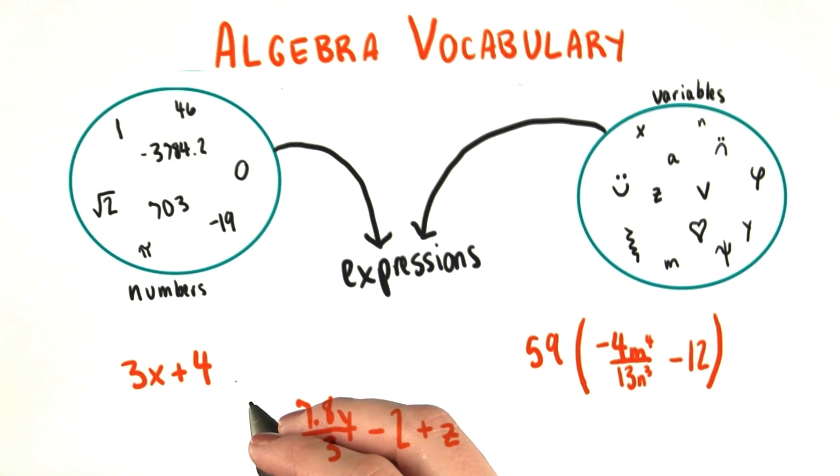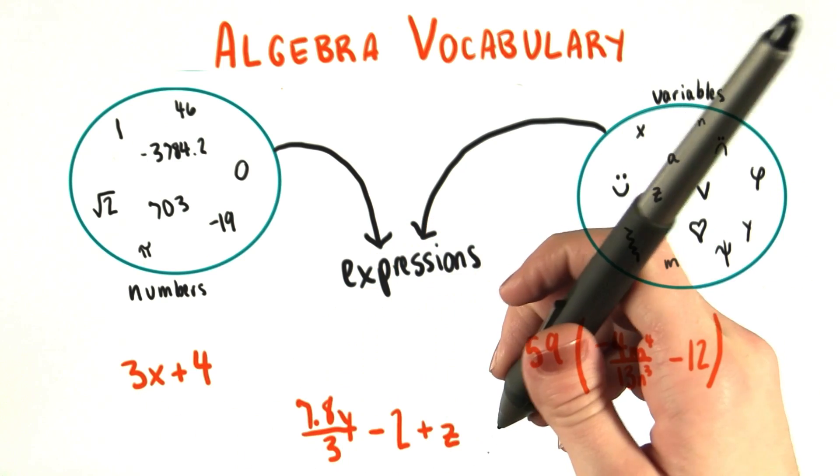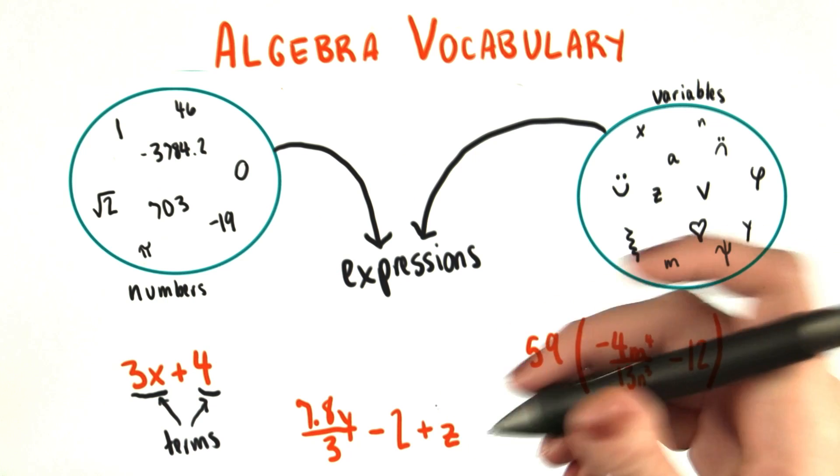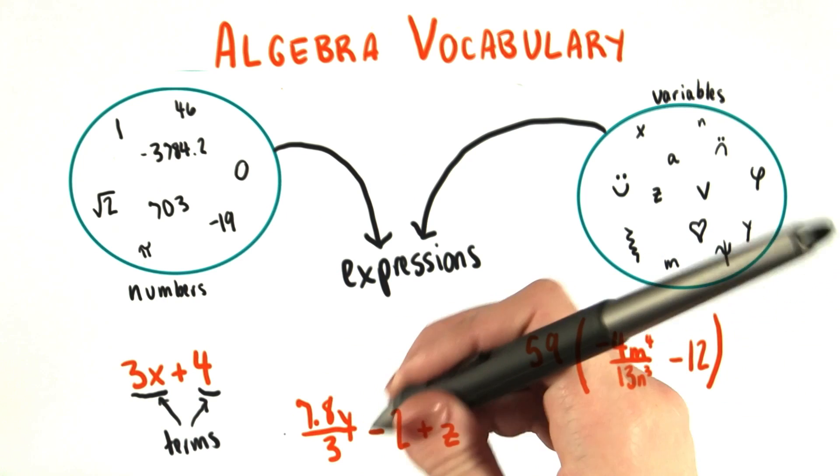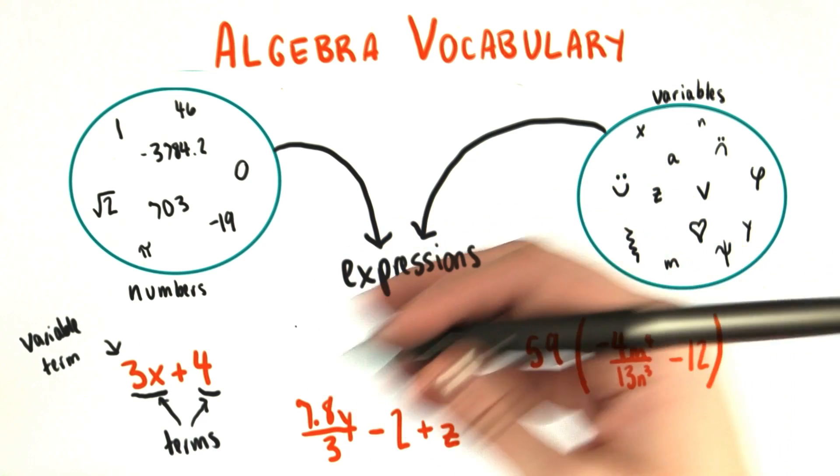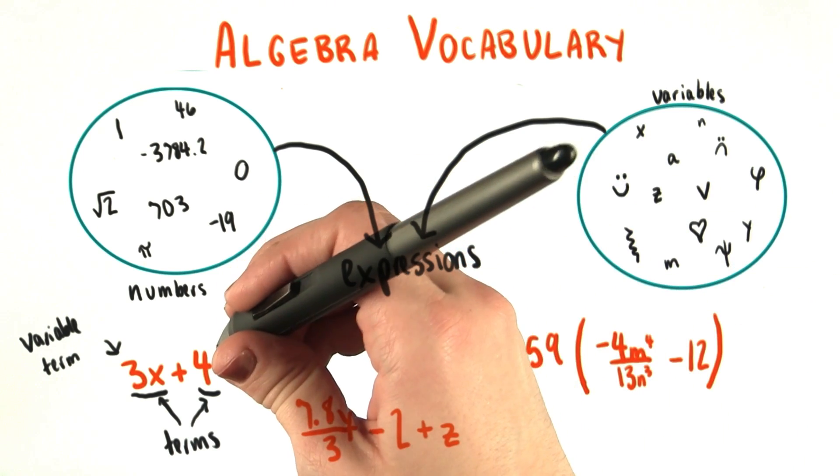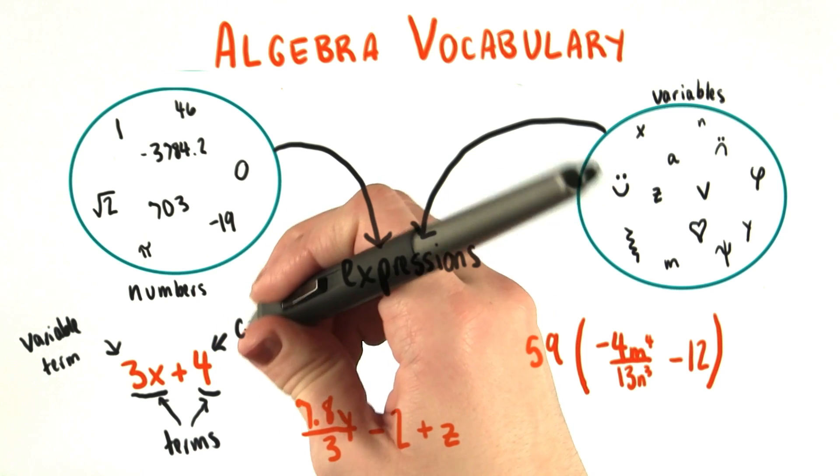The separate things that we add or subtract to come up with expressions are called terms. Any term that has a variable in it is called a variable term, like 7.8y over 3 or z. And other terms that don't have variables in them that are just numbers are called constants or constant terms.